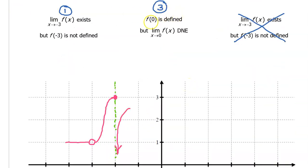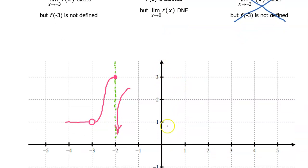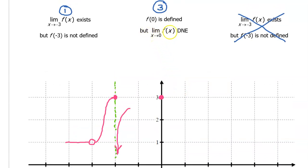Condition 3 says f at 0 is defined. Here's 0 — I'll put a dot on the y-axis, so f at 0 is defined; specifically, f at 0 is 3. But the limit as x approaches 0 does not exist. An easy way for the limit to not exist is if we approach one value from the left yet a different value from the right. So f at 0 is defined, but the limit as x approaches 0 does not exist.